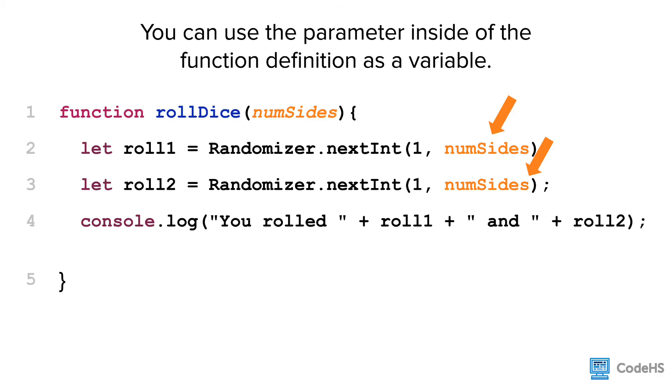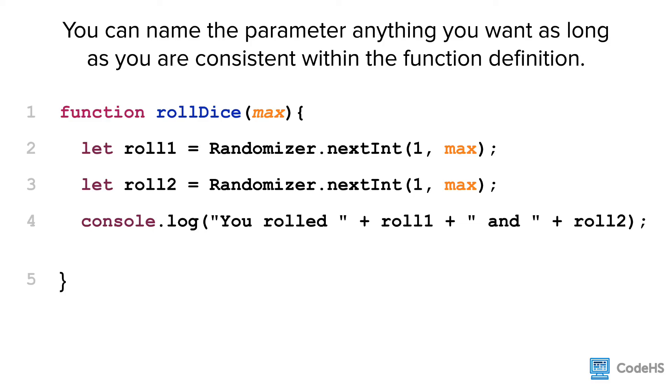In this function, we're using the value of numSides for the maximum value of the randomizer. You can name the parameter anything you want as long as you are consistent within the function definition. You'll also want to make sure to have the parameter name be descriptive of what it will be used for.